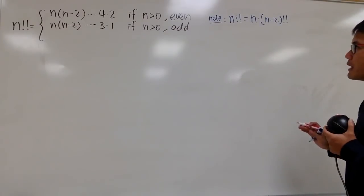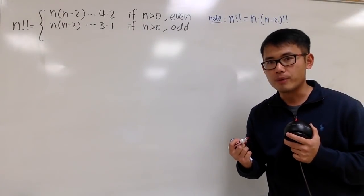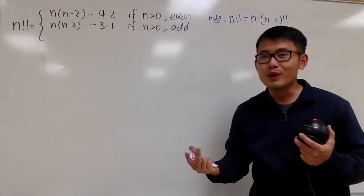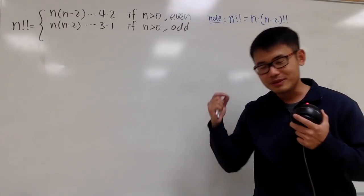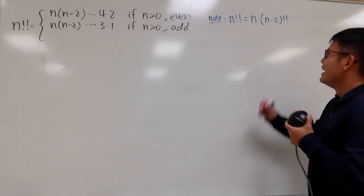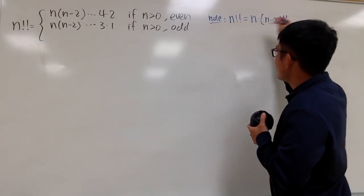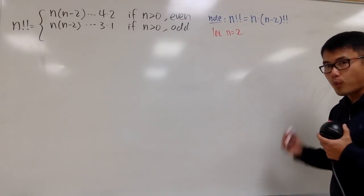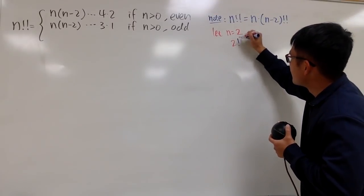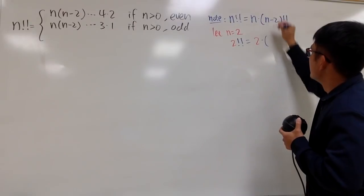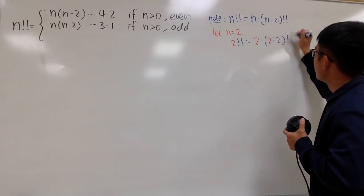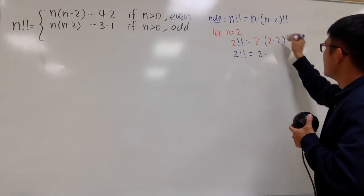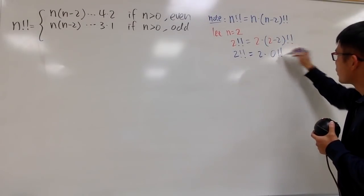And now, from here, I want to end up with 0 factorial. I'm not going to plug in 0 into all the n's, because that way I will have to talk about what's negative 2 factorial. So, in fact, I'm going to go from here and say that n equals 2. Because this way, we will have 2 double factorial, and this is equal to 2 times 2 minus 2, double factorial. And you see, this is just 2 double factorial, and this is just 2 times 2 minus 2, so of course 0. And now we have the double factorial right here.